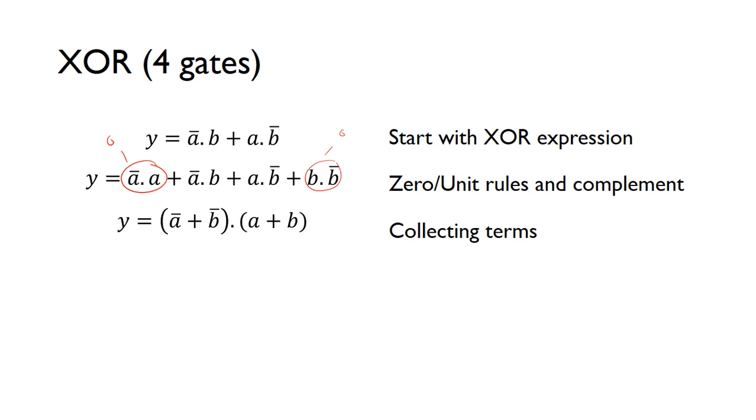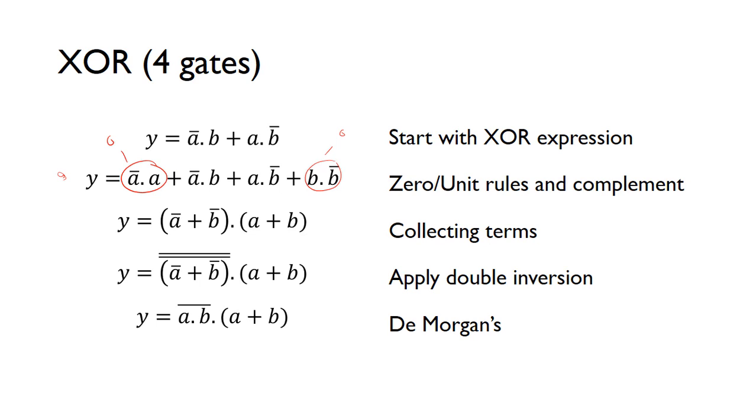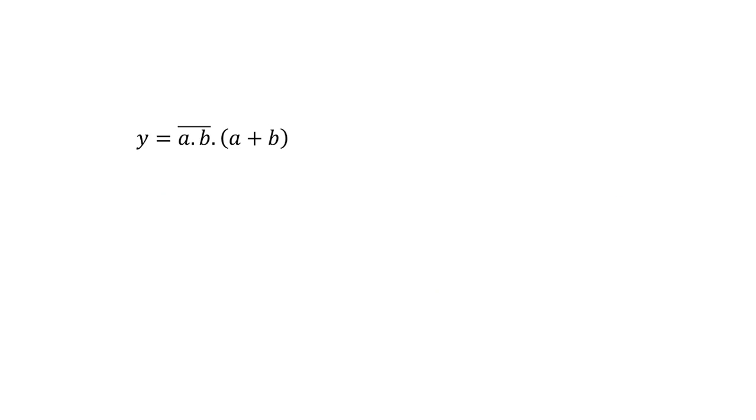And if you inspect that, you can actually see you can start collecting the terms. If you take these brackets and multiply it out, you'll see that you end up with this expression. So we can collect the terms and then start doing what we've done before. Apply double inversion, and then De Morgan's theorem. So break that line and then change this sign, and we'll end up with the two double inversions here which can cancel.